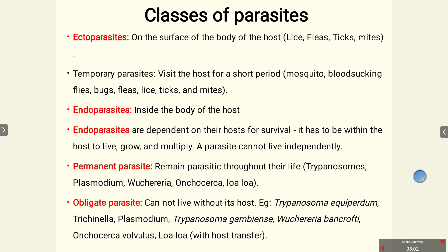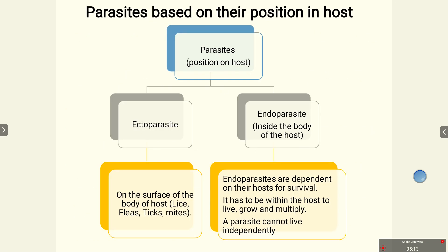Parasites can be classified based on their site of location. They can be either ectoparasites — 'ecto' meaning upon — or endoparasites — 'endo' meaning inside. For example, body lice are present on the outside of the host's body, such as on the head or body surface. Lice, ticks, and mites are examples of ectoparasites. Endoparasites are present inside the body of the host.